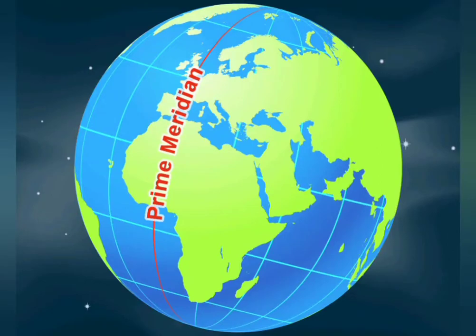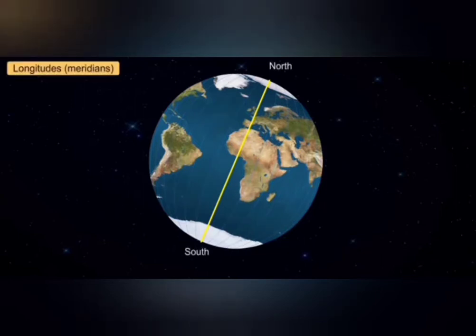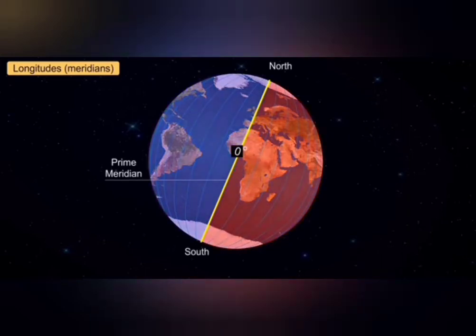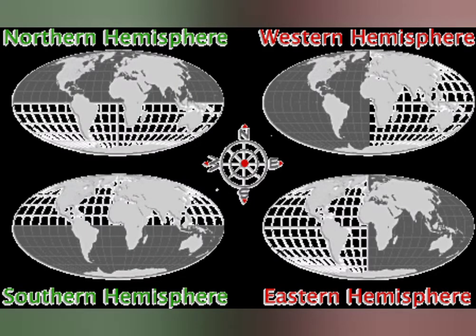There is a circle called the Prime Meridian, which passes through Greenwich in Britain. It is perpendicular to the equator and parallel to the axis. The Prime Meridian divides the earth into two hemispheres — the Eastern and the Western. Together, the equator and the Prime Meridian divide the earth into four equal parts.